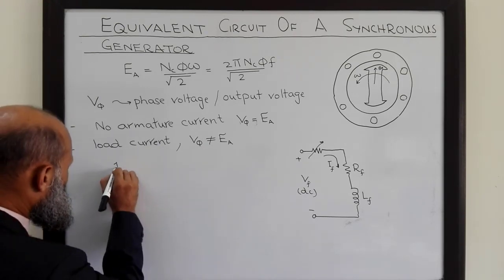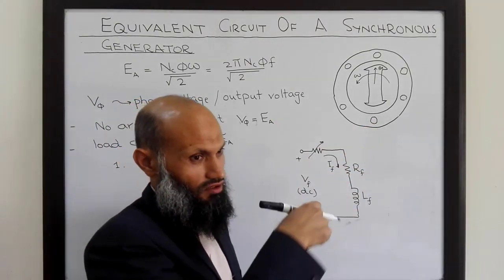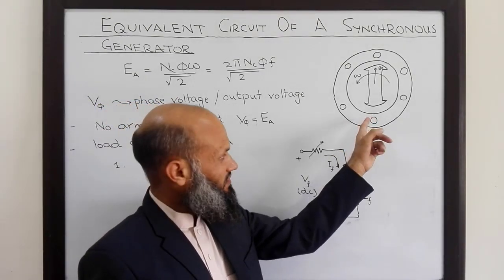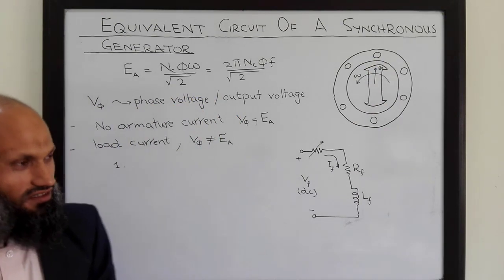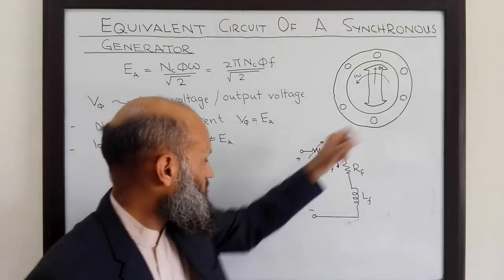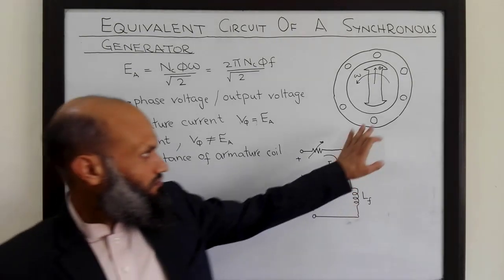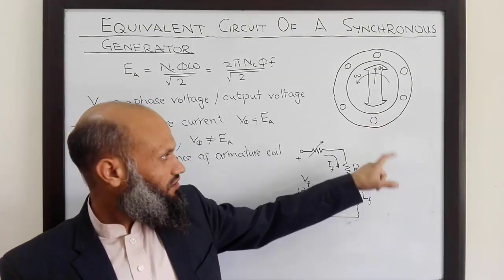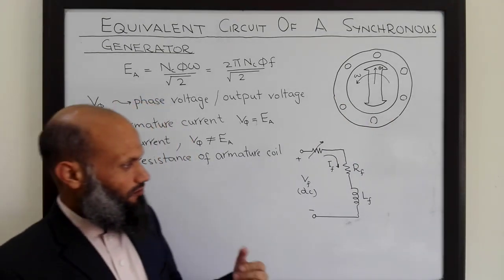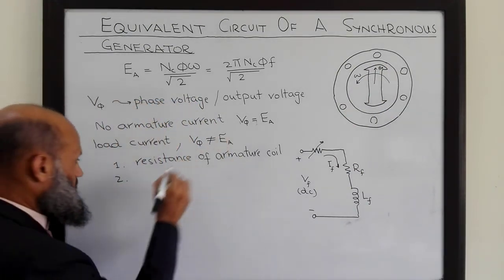What are the reasons for that? The first reason is that the armature windings are coils with multiple turns; although made of copper wire, these coils have some resistance. So some voltage is dropped across the resistance of the armature coils. The second reason is that since we are dealing with AC quantities, inductance also plays its role — some voltage is dropped across the inductive reactance of these armature coils.